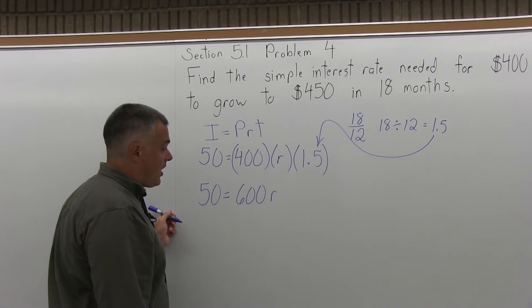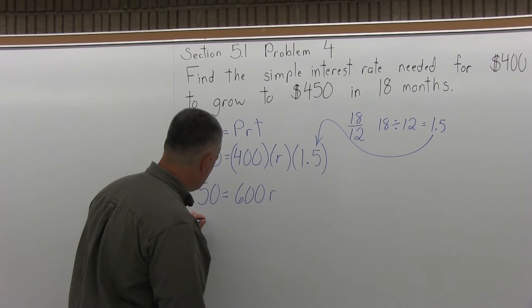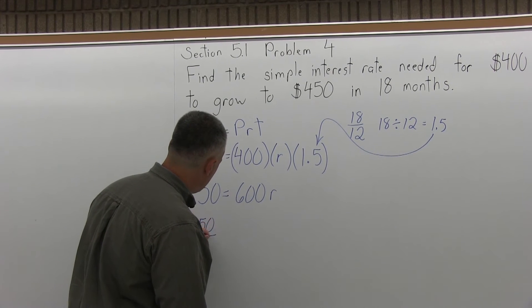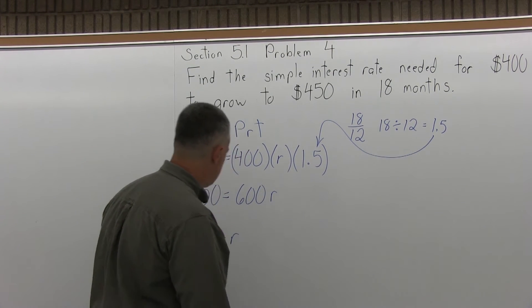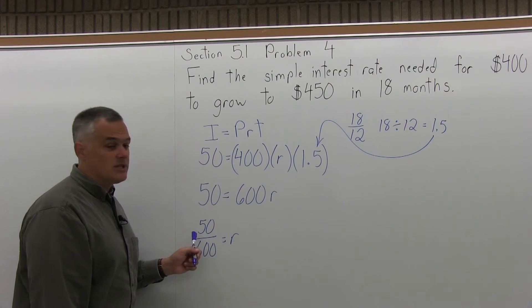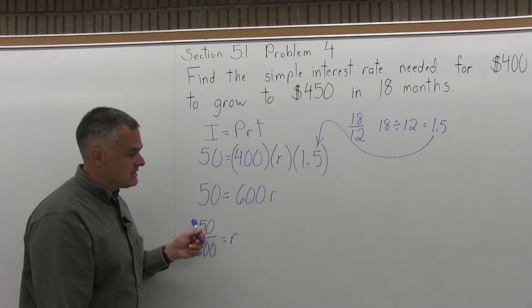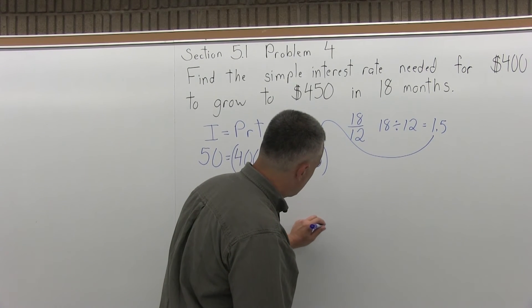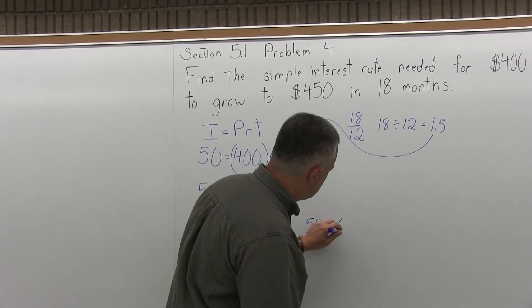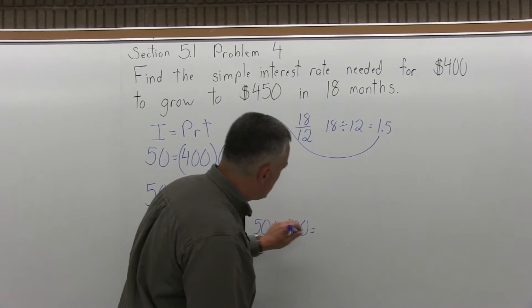So now to solve for R you want to divide out the 600. So I'm going to have 50 over 600 on the left side of my equation equals R. Now that's not something that most people would reduce easily in their head. So with your calculator you want to enter the top of that fraction first. 50 divided by 600 hit equals,